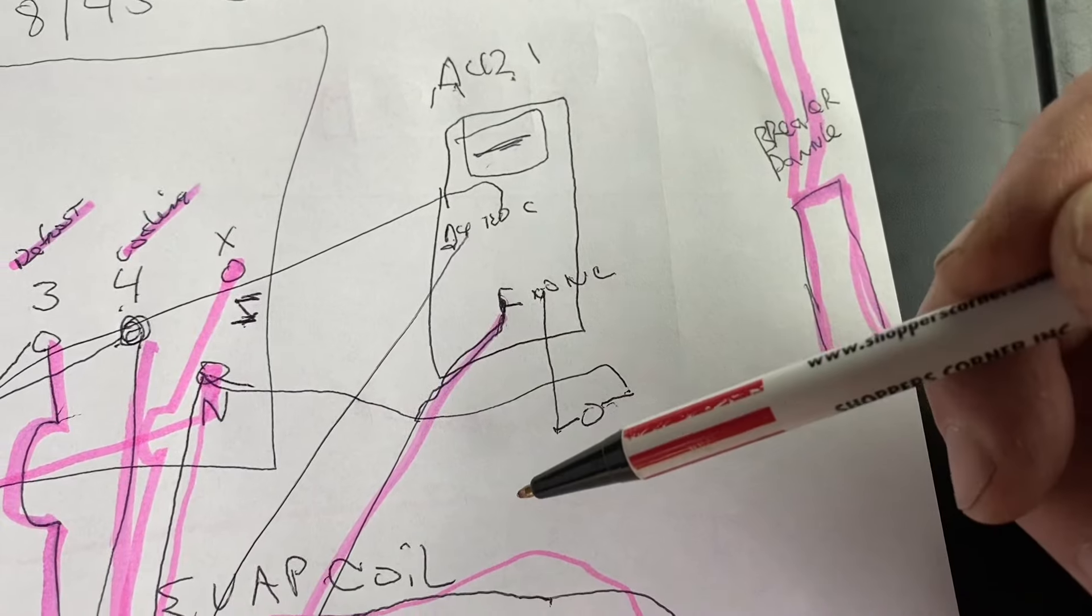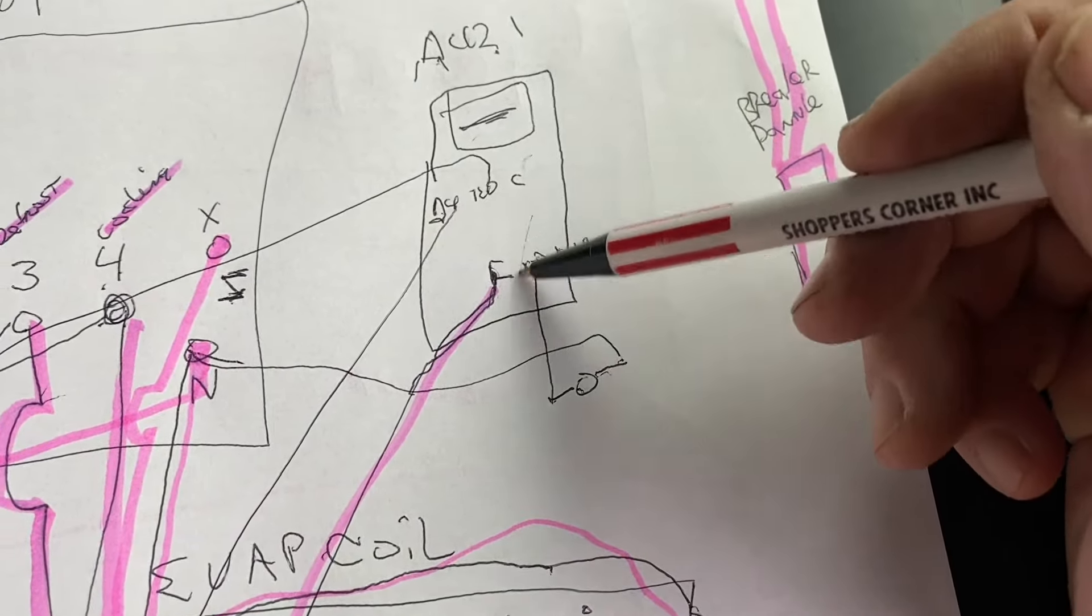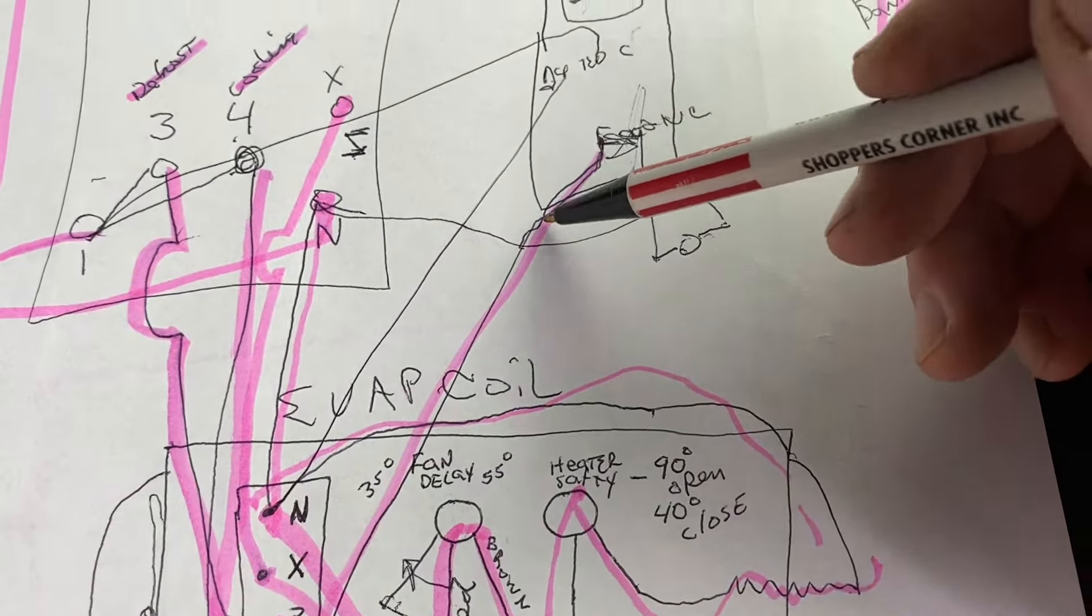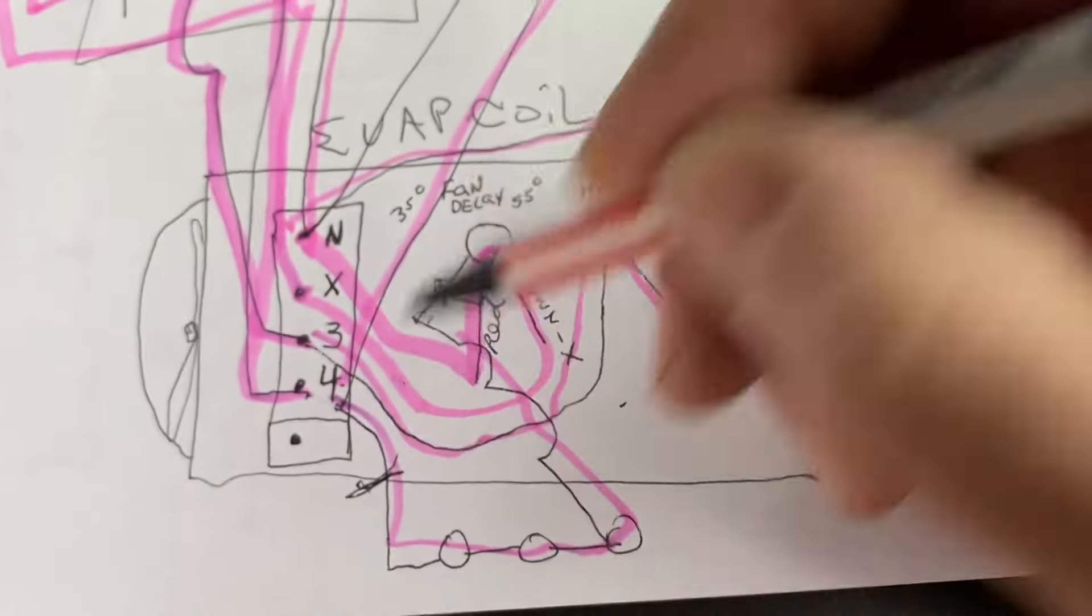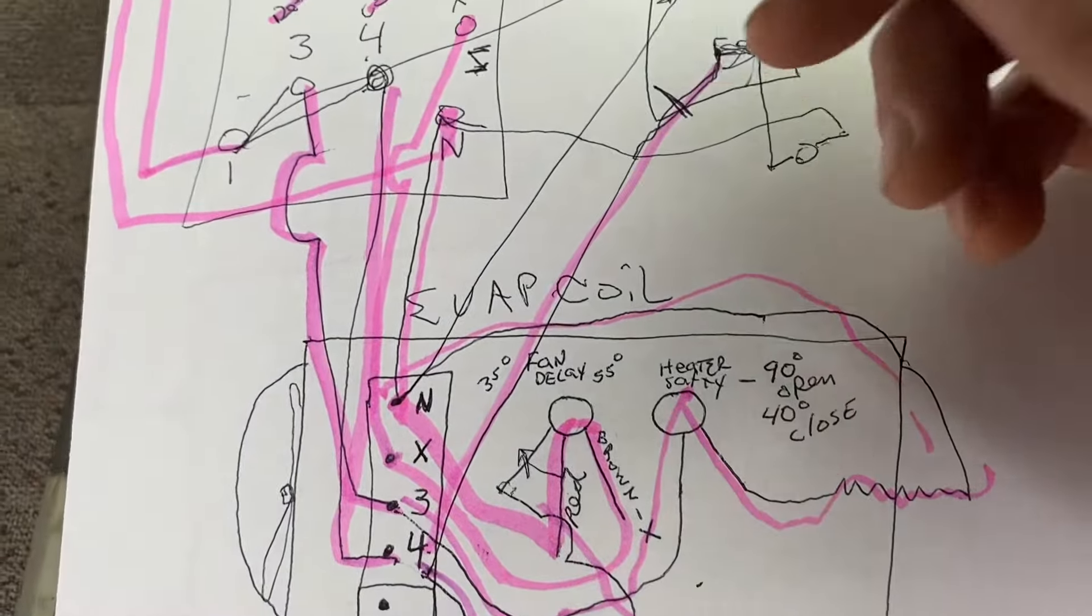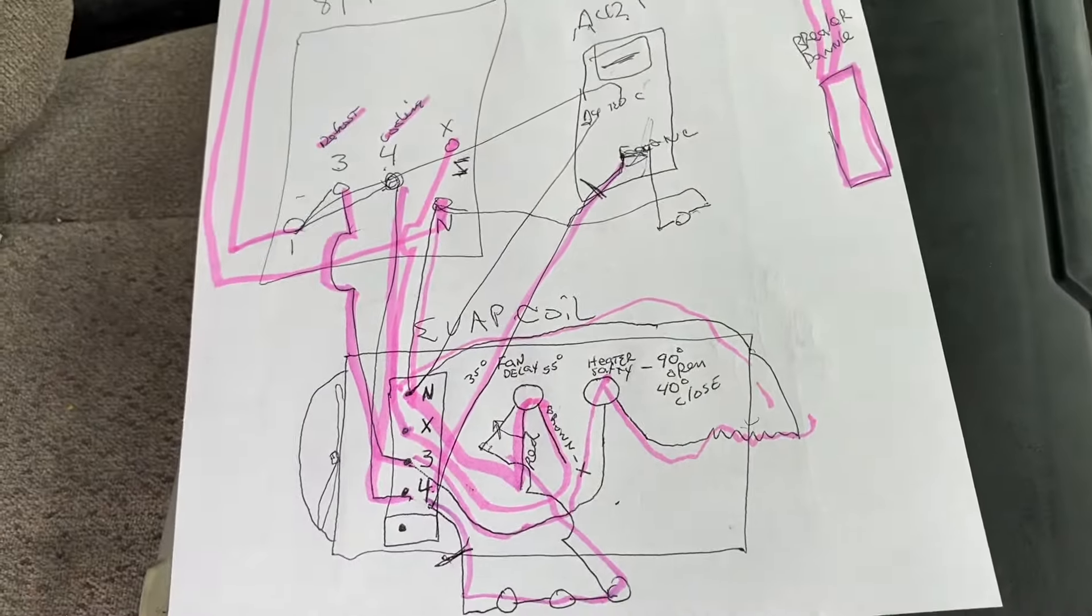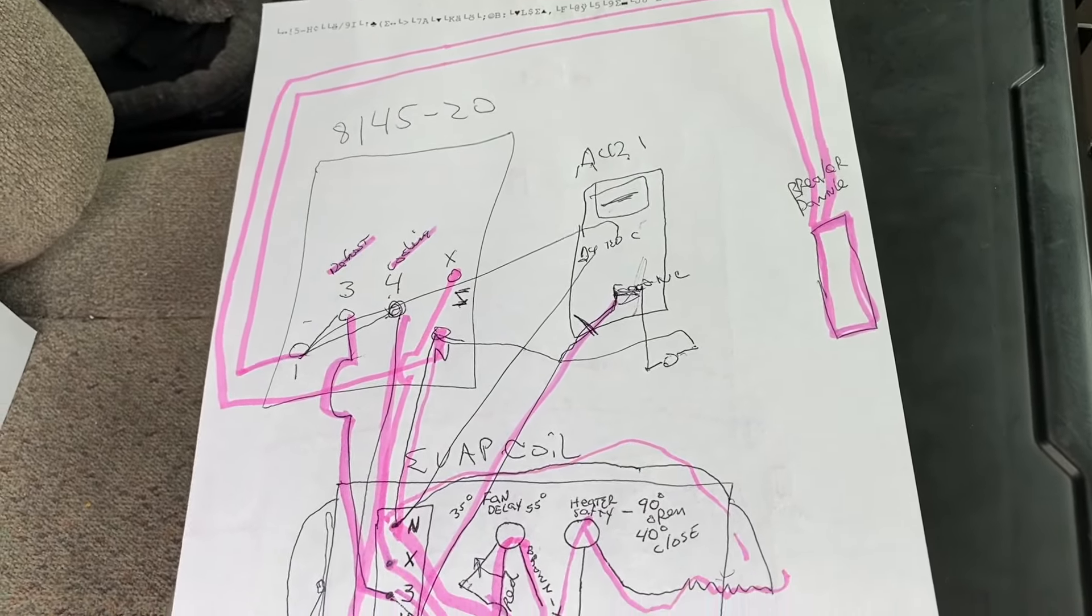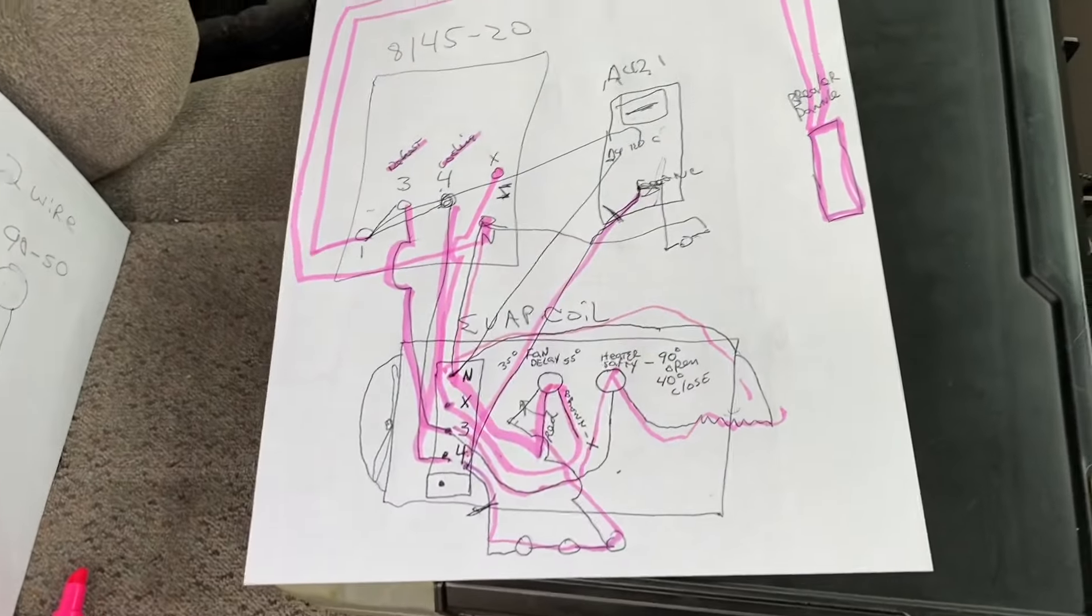So we're thermostat's powered up, our solenoid valve is getting switched through our thermostat right here. We go in the defrost, we lose this leg, that turns off. Our fans turn off and our heaters energize because this goes to three and now our heaters are energized for defrost. And that's pretty much everything down below in funky monkey layman's terms. And all that spaghetti is shoved inside the side of your evaporator coil.